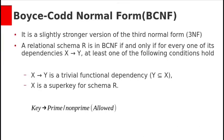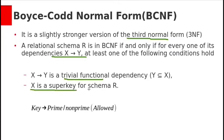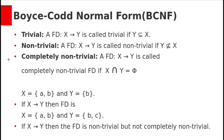We have already seen 1NF, 2NF, and 3NF. Let us see Boyce-Codd Normal Form. It is a slightly stronger version of third normal form. A relation schema R is in BCNF if and only if for every one of its functional dependencies x derives y, it satisfies one of these conditions: x derives y is a trivial functional dependency, or x is a super key for schema R.